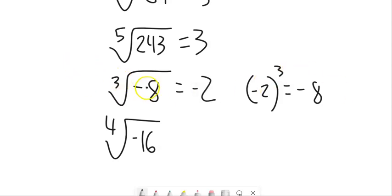I can actually take the third root of a negative number. Because if you think about taking negative 2 to the third power, it's negative 2 times negative 2 times negative 2. These two make a positive, positive 4. But positive 4 times negative 2 gives me a negative 8.